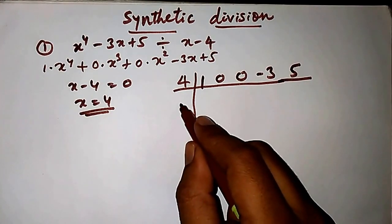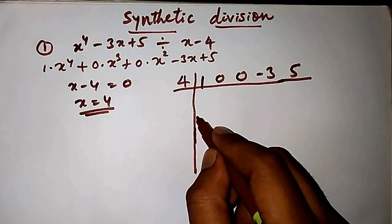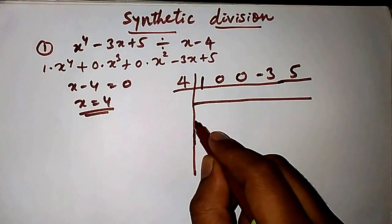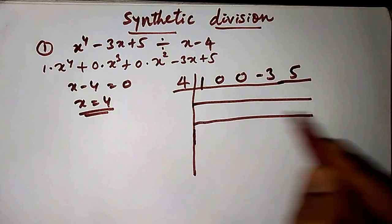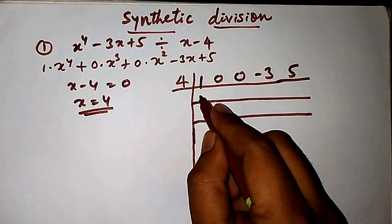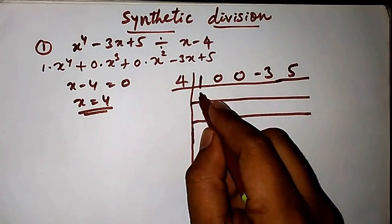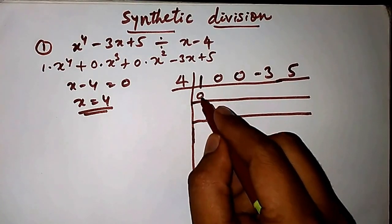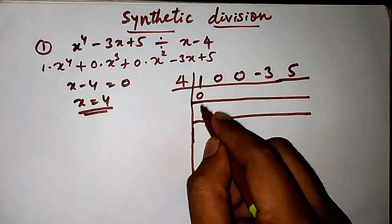Leave one line here then start with another one. First keep 0 below the first variable and add this variable, 1 plus 0 is 1.